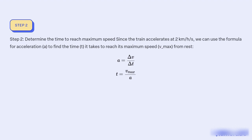Step 2: Determine the time to reach maximum speed. Since the train accelerates at 2 km/h/s, we can use the formula for acceleration to find the time t it takes to reach its maximum speed v_max from rest: a = Δv / Δt, therefore t = v_max / a.